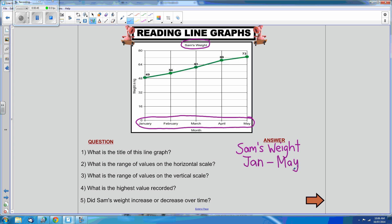Question 3: What is the range of values on the vertical scale? Here is our vertical scale on the y-axis. The range is from 0 to 80. And if we look at our label, we can see that we are talking about weight in kilograms. So our range of values on the vertical scale is 0 to 80 kilograms.